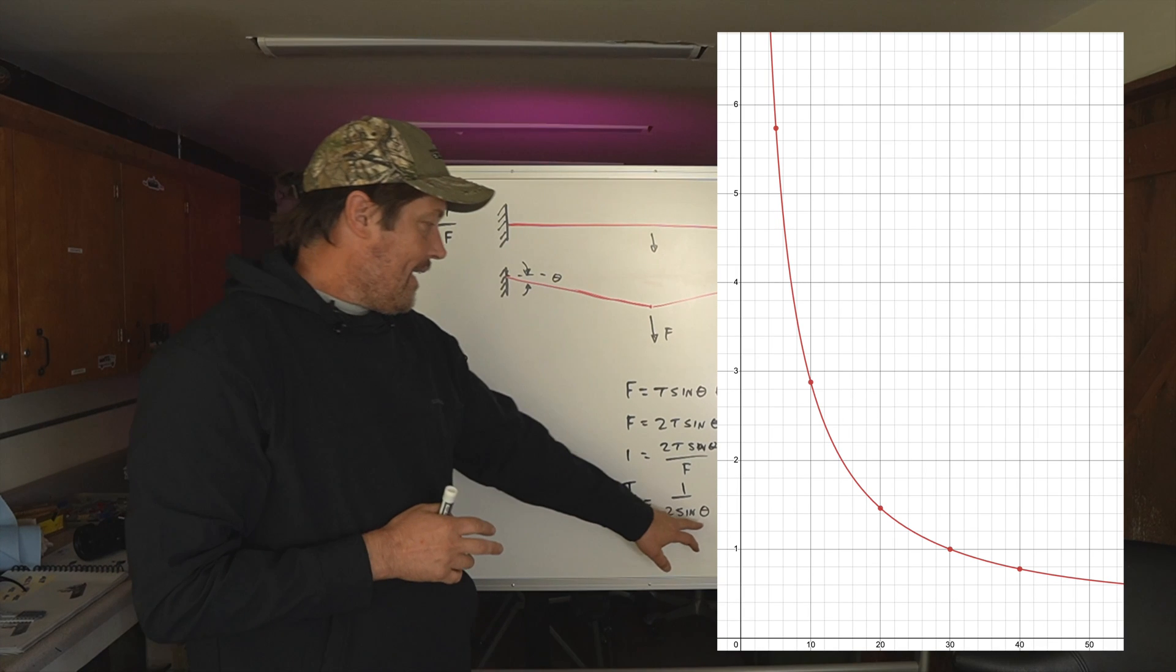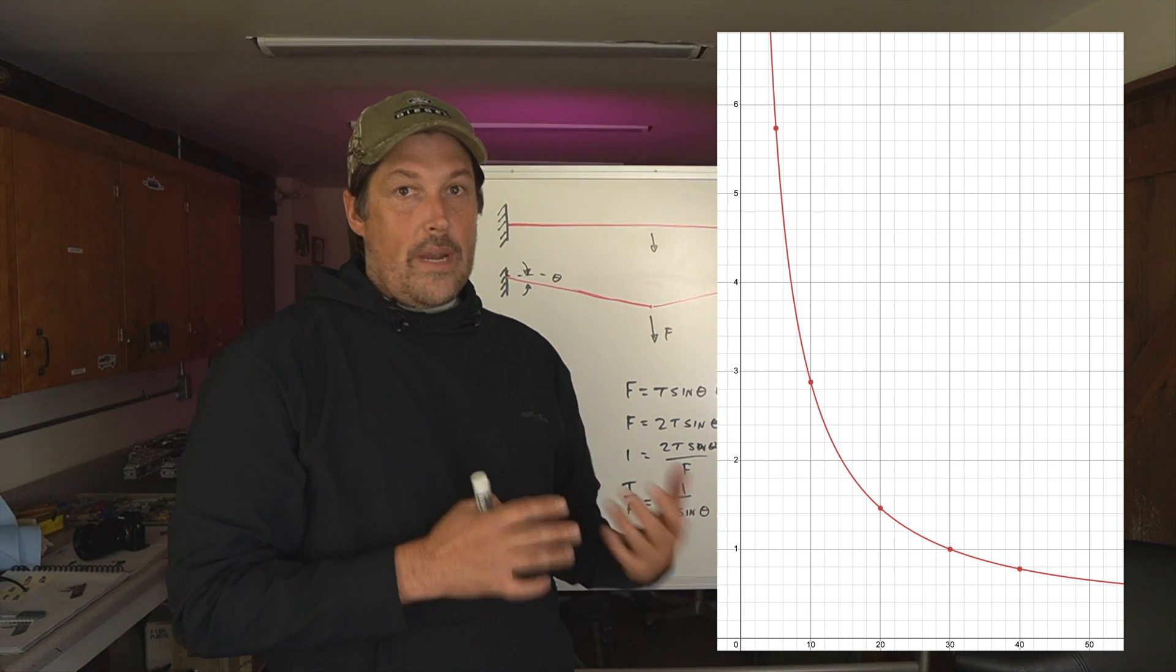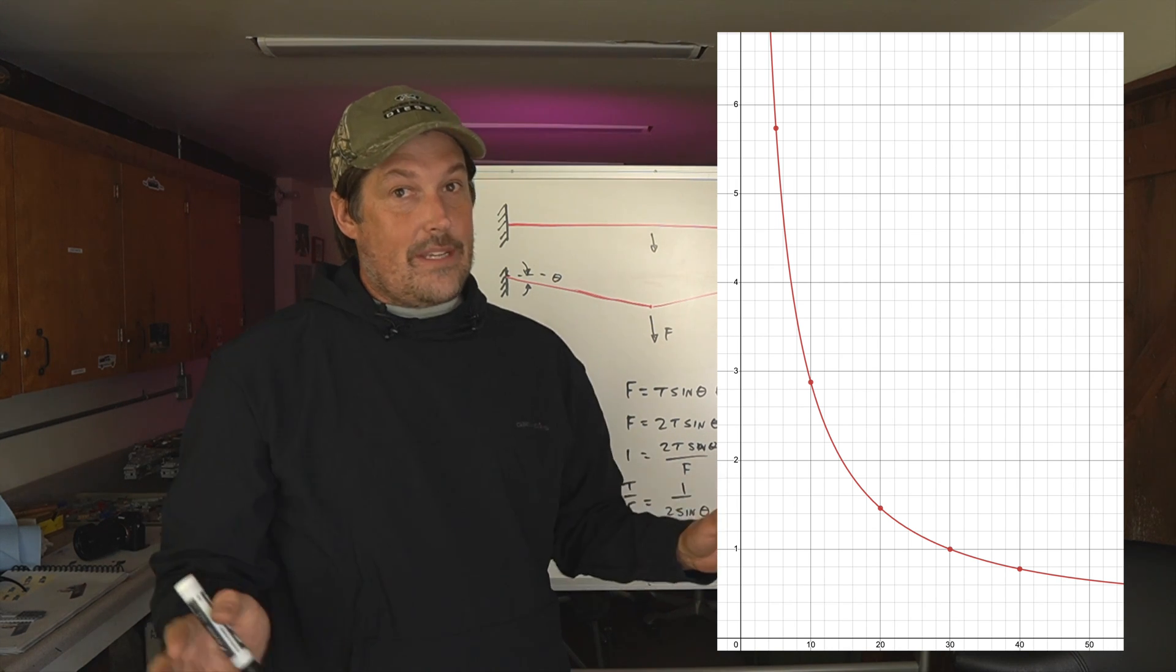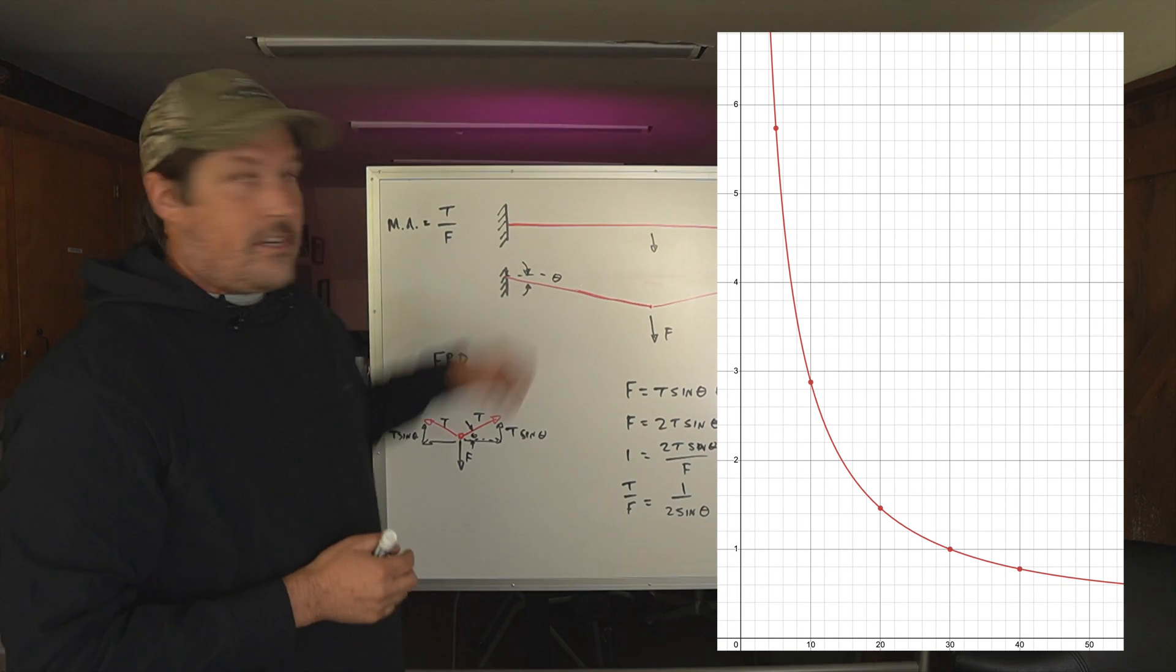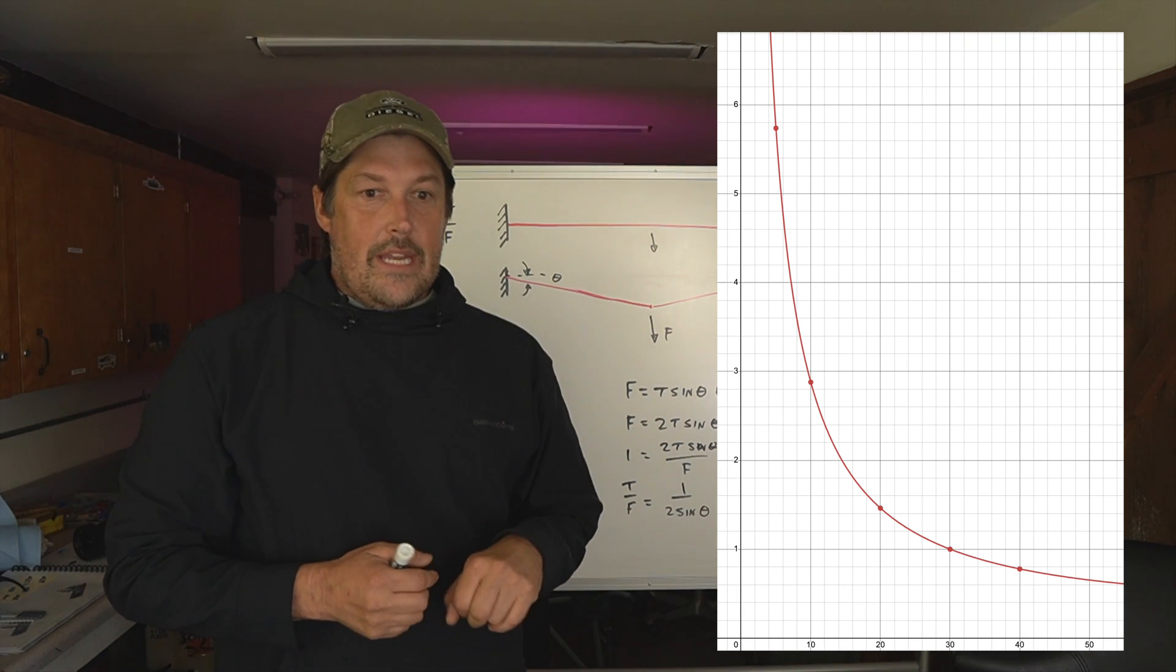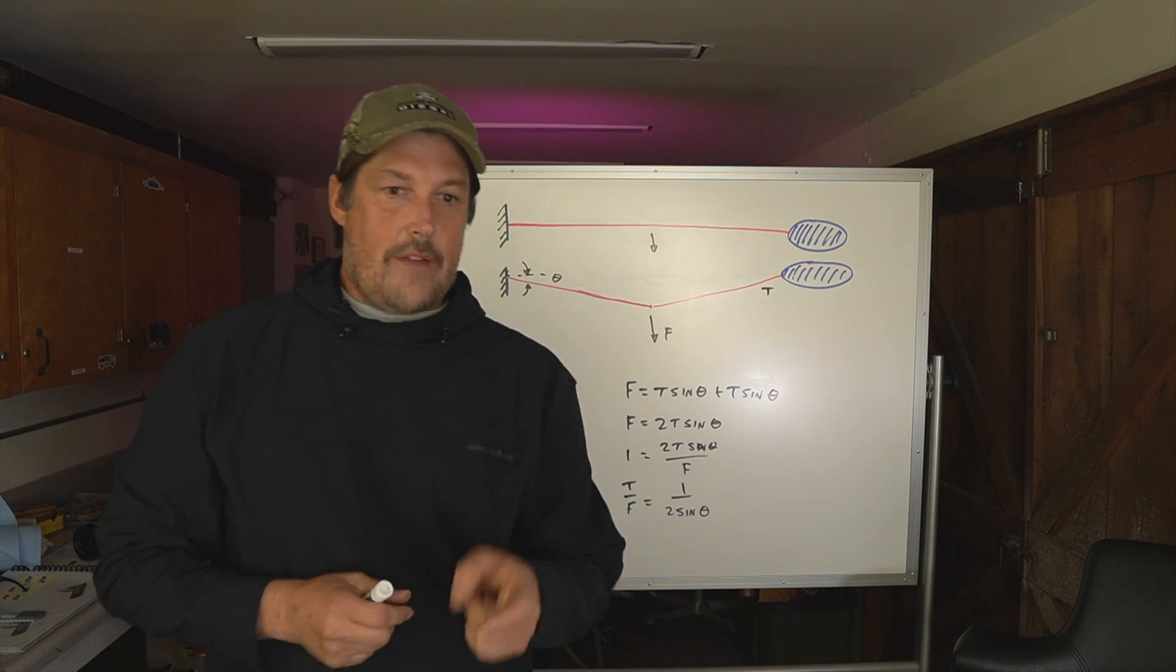But when theta gets to even 10 degrees, the mechanical advantage drops to like 2.8 to 1. And 10 degrees is not a lot of degrees. If you get a protractor out, 10 degrees is not very much. This is probably more than 10 degrees here. So you're getting at 10 degrees, you're getting 2.8 to 1.